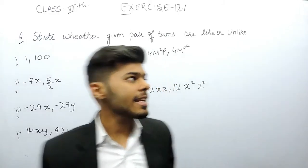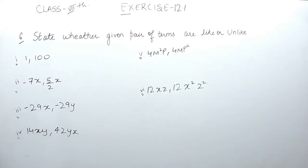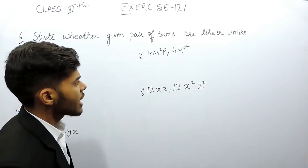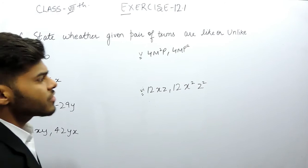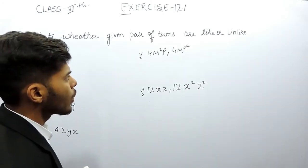Hello everyone, this is the 6th question of exercise 12.1. In this question we have to tell if pairs of terms are like or unlike terms. Like terms are those which have the same variable quantity, and unlike terms are those which have different variable quantities.